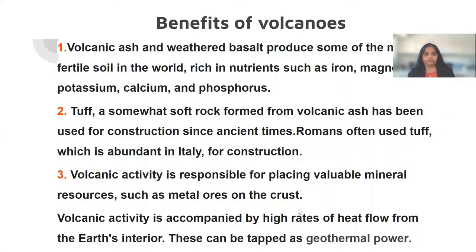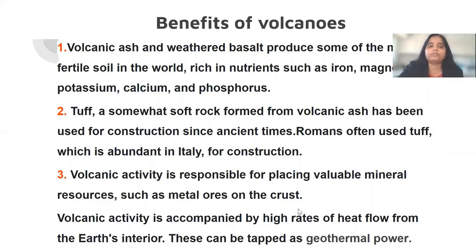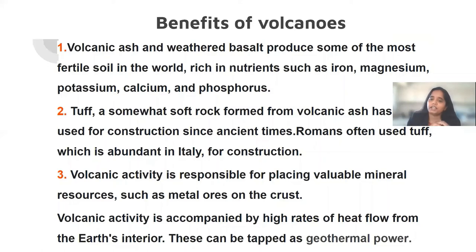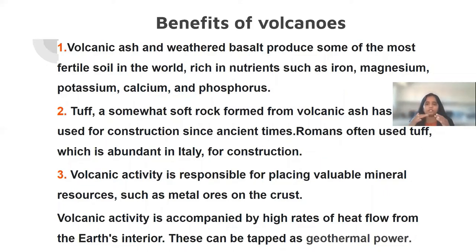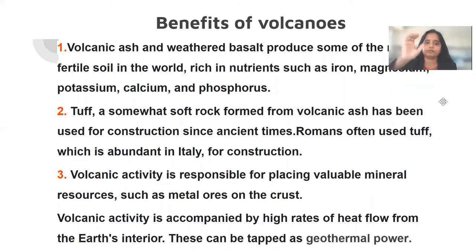Benefits of a volcano: Volcanic ash and weathered basalt produce some of the most fertile soil in the world, rich in nutrients such as iron, magnesium, potassium, calcium, and phosphorus. Because volcanoes have their sources deep within the earth, and the lower parts of the earth are very rich in nutrients, when volcanoes erupt and rocks come out, these rocks are rich in nutrients. When these rocks are weathered over time and form soils, those soils are also rich in nutrients.